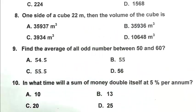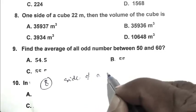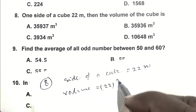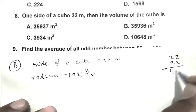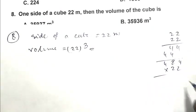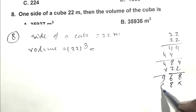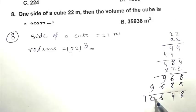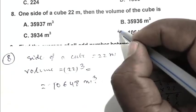Question number 8: One side of a cube is 22 meters. Then the volume of the cube is? So friend, side of a cube is 22 meters. So volume is 22 cubed. That is 22 multiplied by 22 multiplied by 22, which equals 10,648 cubic meters. So friend, D is the right answer.